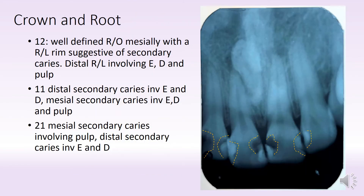So let's look at the crown and the root of this particular area. Very clearly we can see that there are a lot of radiolucencies which are mixed with radio-opaque areas. So let's start with the one on the most left, which is the 1-2.